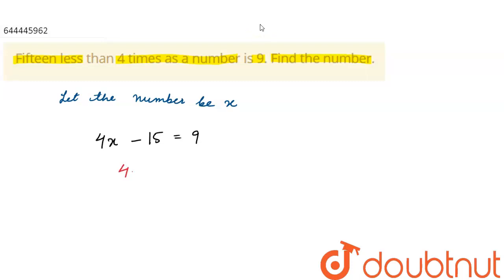Taking 15 to the right hand side, we have 4x equals 9 plus 15. 9 plus 15 is 24, so we have 4x equals 24.